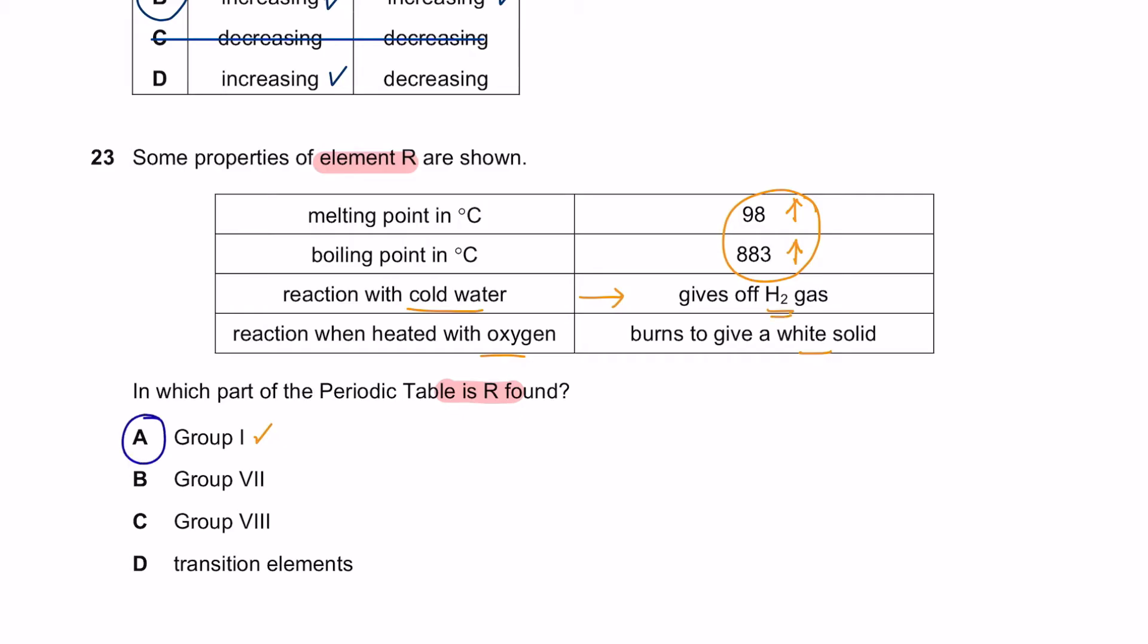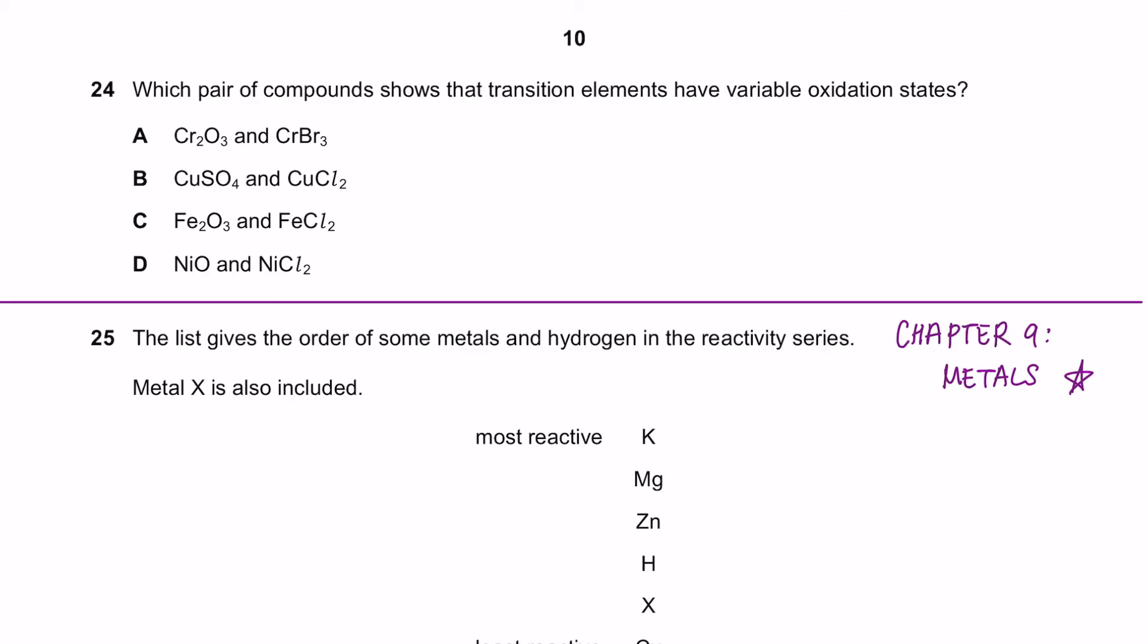So the answer is A. Question 24. Which pair of compounds show that transition elements have variable oxidation states?